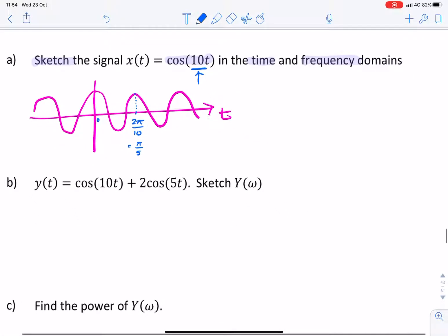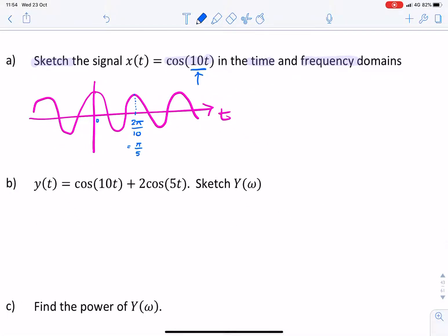Now, in the frequency domain, the cosine signal, if you look at the table of Fourier pairs, the cosine signal is simply a pair of impulses at plus minus ω₀.